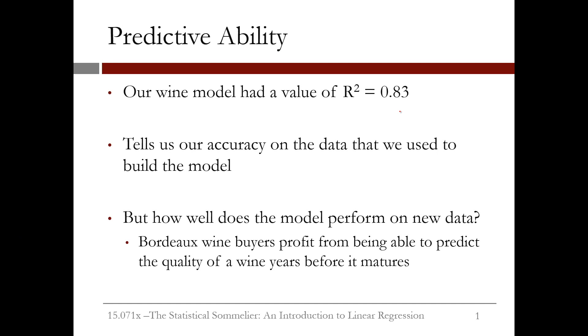Our wine model had an R² value of 0.83, which tells us how accurate our model is on the data we used to construct the model. So we know that our model does a good job at predicting the data it has seen.